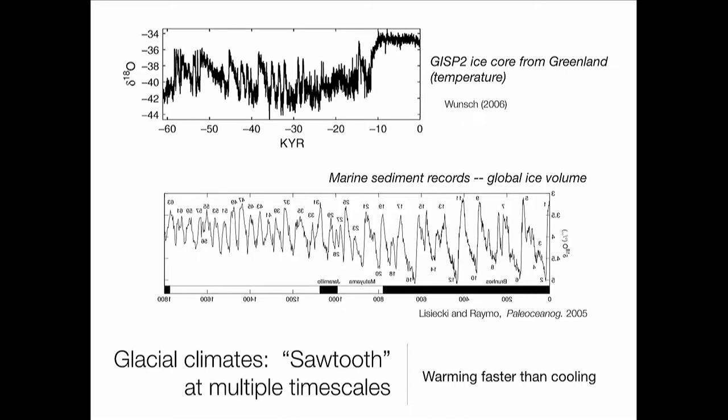Going back further, here you see another kind of sediment record showing the coming and going of the great ice sheets over these hundred-thousand-year time periods. Here's today and here's a bunch of big ice ages that occurred, and smaller more rapid ice ages that occurred before that. One of the interesting themes you can see on plots like this is the prevalence of sawtooth signals — warming happens more rapidly than cooling. We can see that in these curves.